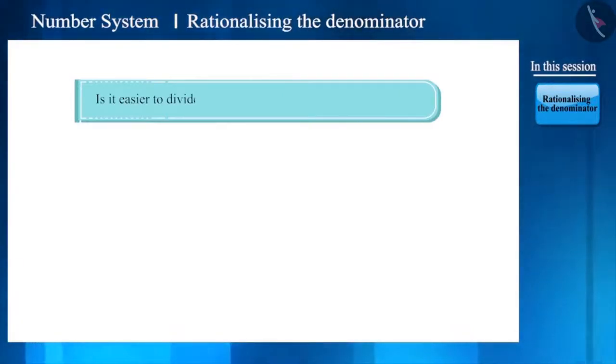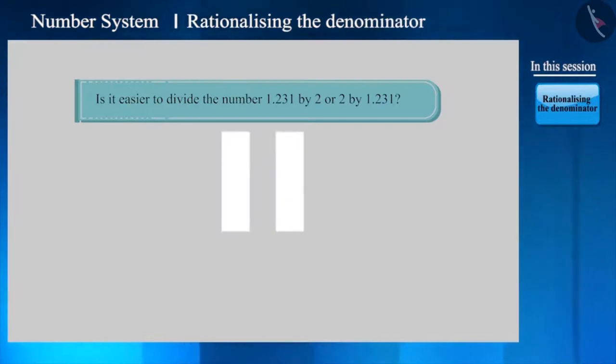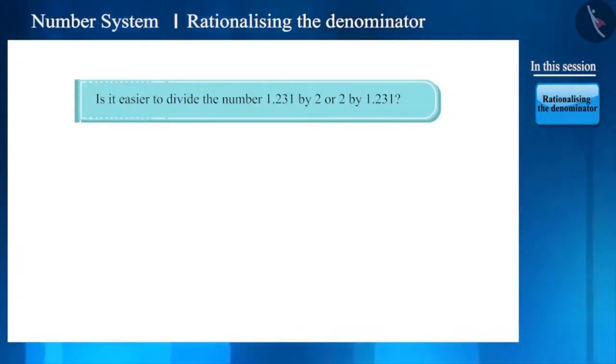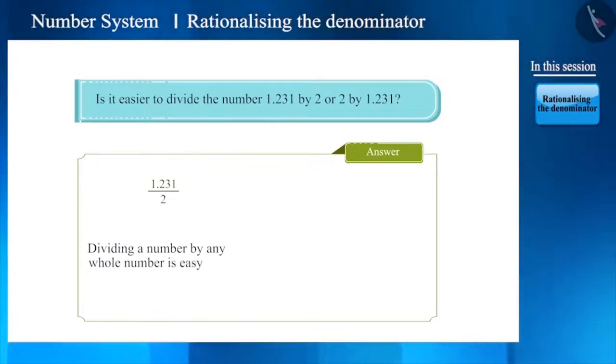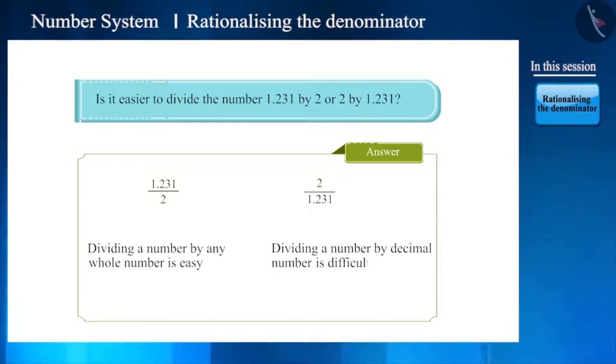You can pause the video to see which division is easier. In order to divide by 2, we just have to remember the multiplication table of 2. Not only by 2, it is easy to divide by any whole numbers such as 5, 12, 35, and 6. Similarly, when we divide a number by 1.231 or by any decimal number, it will be a tough task to remember its multiplication table or find its product.